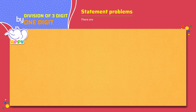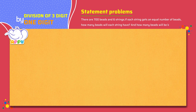There are 700 beads and 6 strings. If each string gets an equal number of beads, how many beads will each string have? And how many beads will be left out?